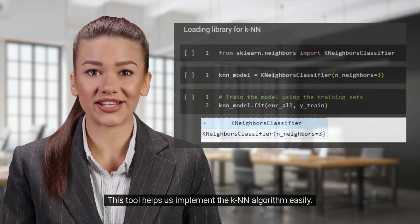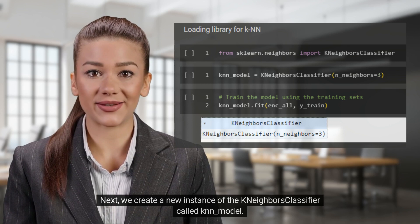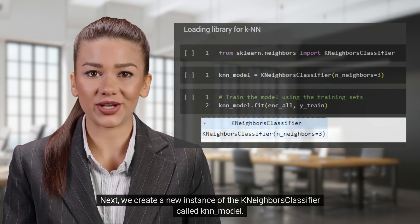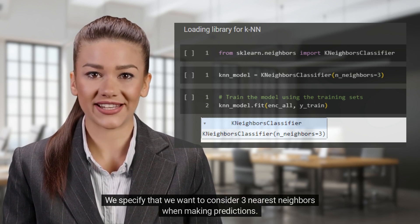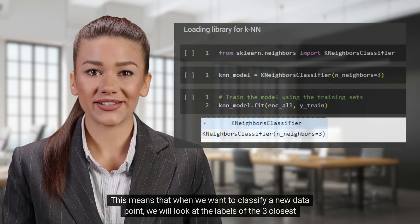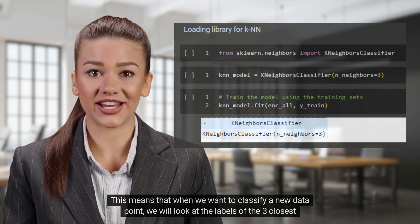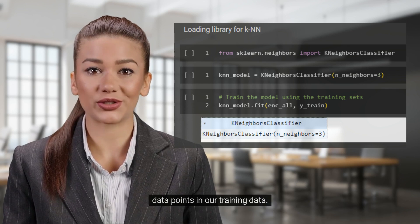Next, we create a new instance of the KNeighborsClassifier called knn_model. We specify that we want to consider three nearest neighbors when making predictions. This means that when we want to classify a new data point, we will look at the labels of the three closest data points in our training data.